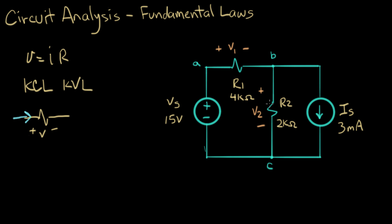We'll get the voltage here, we'll call this plus minus V2. That's the voltage across R2. It's also the voltage across the current source. It's the voltage between node B and node C.